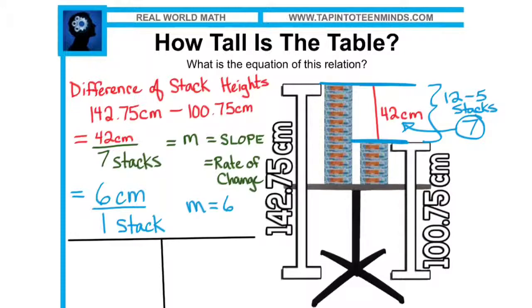Now using the information from either of our stacks, I could focus on our stack of 12 papers. And I can use the knowledge that every stack of paper is six centimeters in order to determine the height of the table. So 12 stacks of paper times six centimeters is 72 centimeters total, and therefore our table height must be 70.75 centimeters.